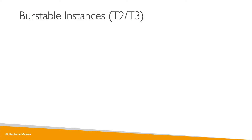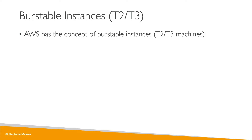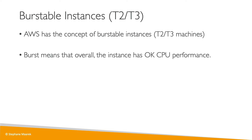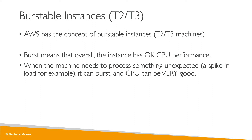Let's have a look at burstable instances in AWS — for example, T2 or T3, the T family overall. When you have a T2 or T3 type of instance, it will have okay CPU performance. And then when the machine needs to process something very unexpected that requires a lot of CPU for a spike in load, it can burst — the CPU can become very good and handle that spike for you.